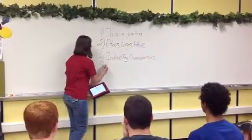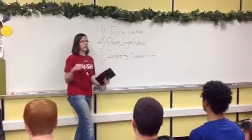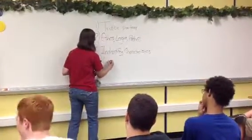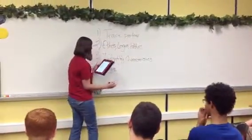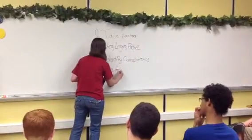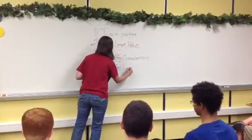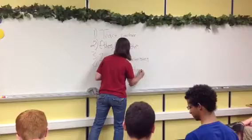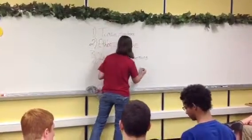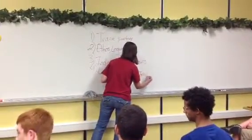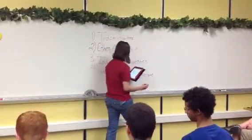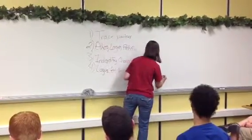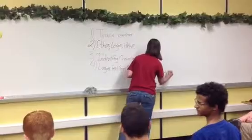Okay, so then a fourth thing is you are going to write each one in different parts of the person. Logos will be in the feet and legs of your person. Pathos will be in the torso and arms. And then ethos will be in the head and chest area.